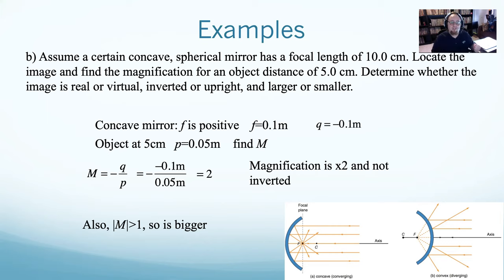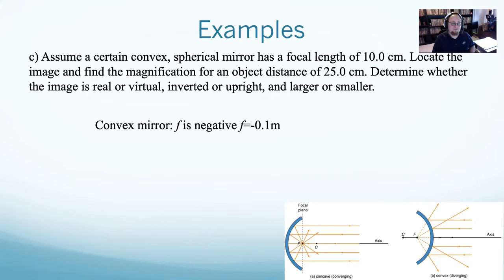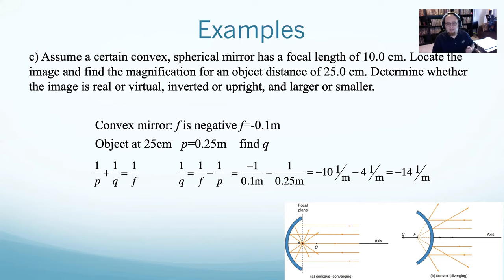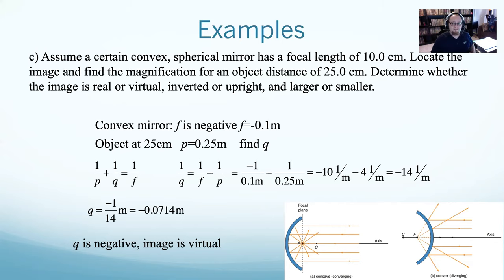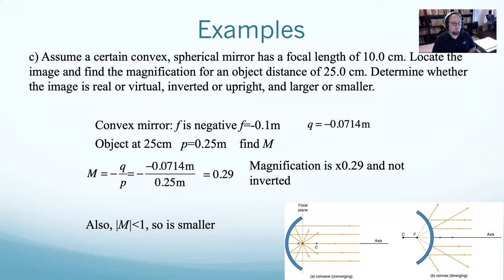Now for a convex mirror with the same focal length of 10 centimeters and object distance of 0.25 meters — if it's a convex mirror, you have to make the focal length negative, so f = negative 0.1. Using the same equation, 1/q = negative 14, so q = negative 1/14. It's a negative number, so this is also a virtual image. Magnification is positive, so it is upright, and less than 1, so it is smaller.